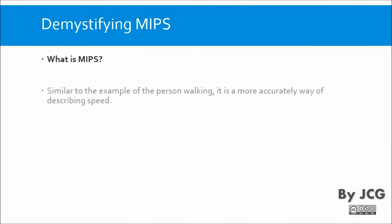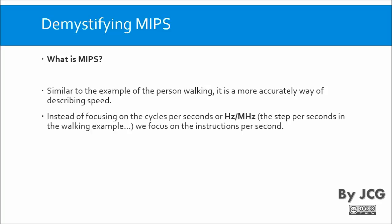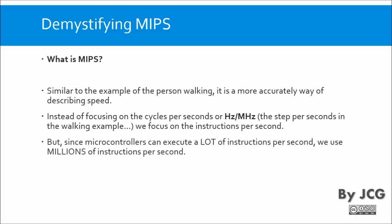So what is MIPS? Similar to that example, it is a more accurate way of describing speed. Instead of focusing on cycles per second — hertz or megahertz — we focus on instructions per second. Since microcontrollers can execute a lot of instructions per second, we use millions of instructions per second. One million instructions per second equals one MIPS.